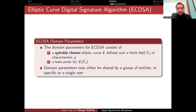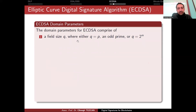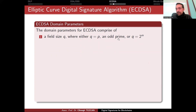Choosing a suitably chosen elliptic curve is not something that can be easily done — you have to carefully choose your elliptic curve because there are many elliptic curves you can define over F_Q. The domain parameters for ECDSA comprise a field size Q, where either Q equals P, a large prime, or Q equals 2 to the power M. The standards force us to use either a huge prime number or a power of 2, mostly due to simplicity and performance.